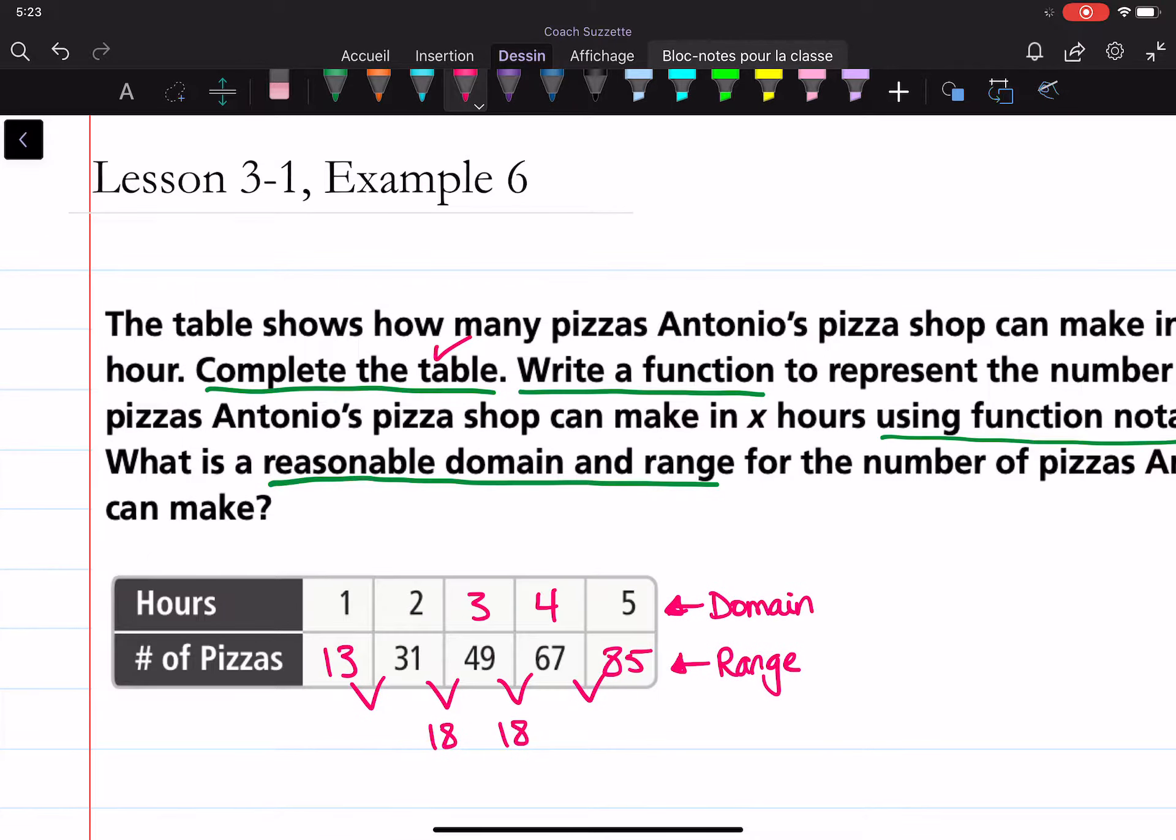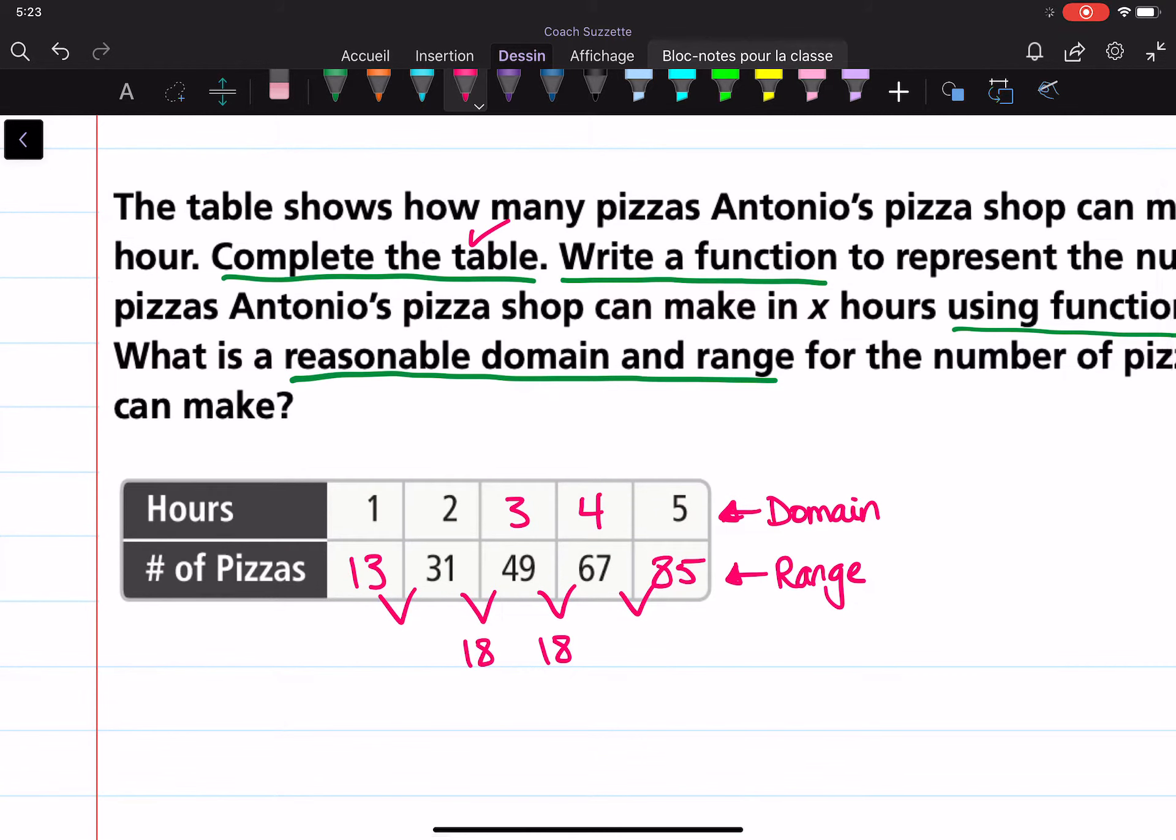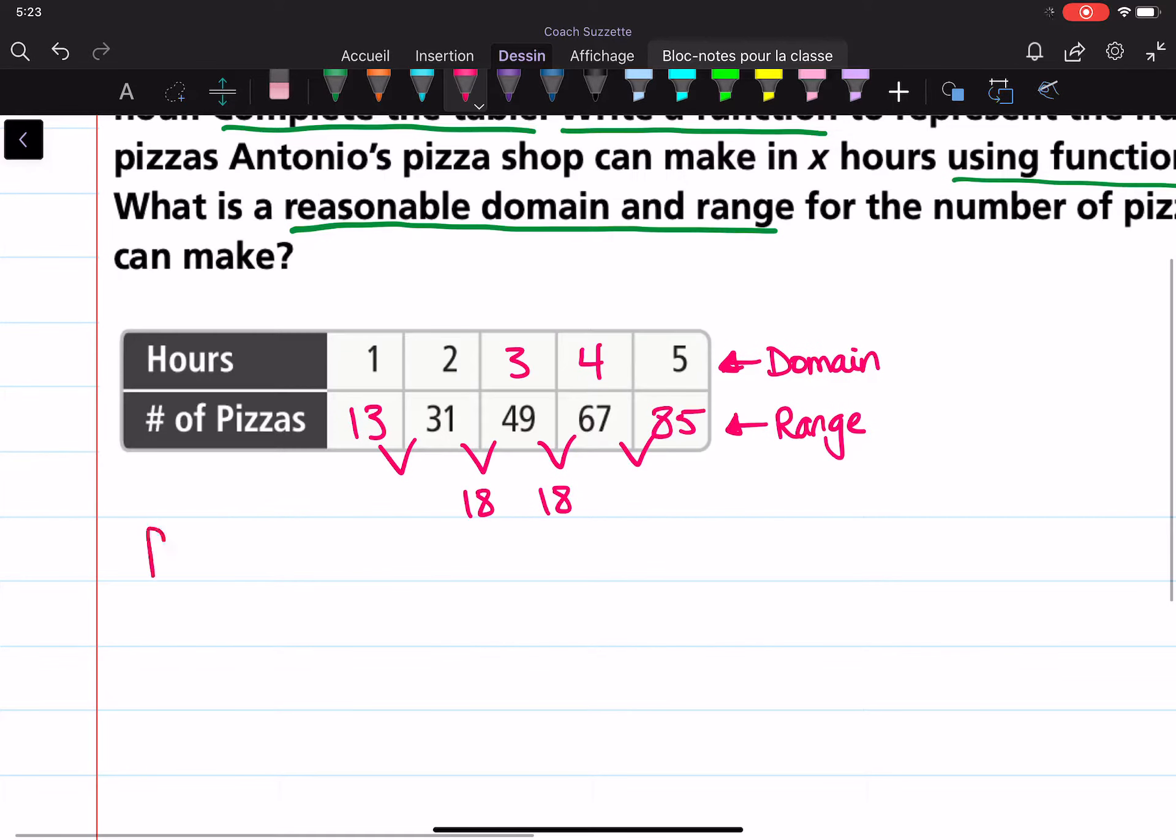Now we need to write a function to represent the number of pizzas Antonio's Pizza Shop can make in x hours. So that's the same as saying we need to write the equation of a line that passes through each of these points.